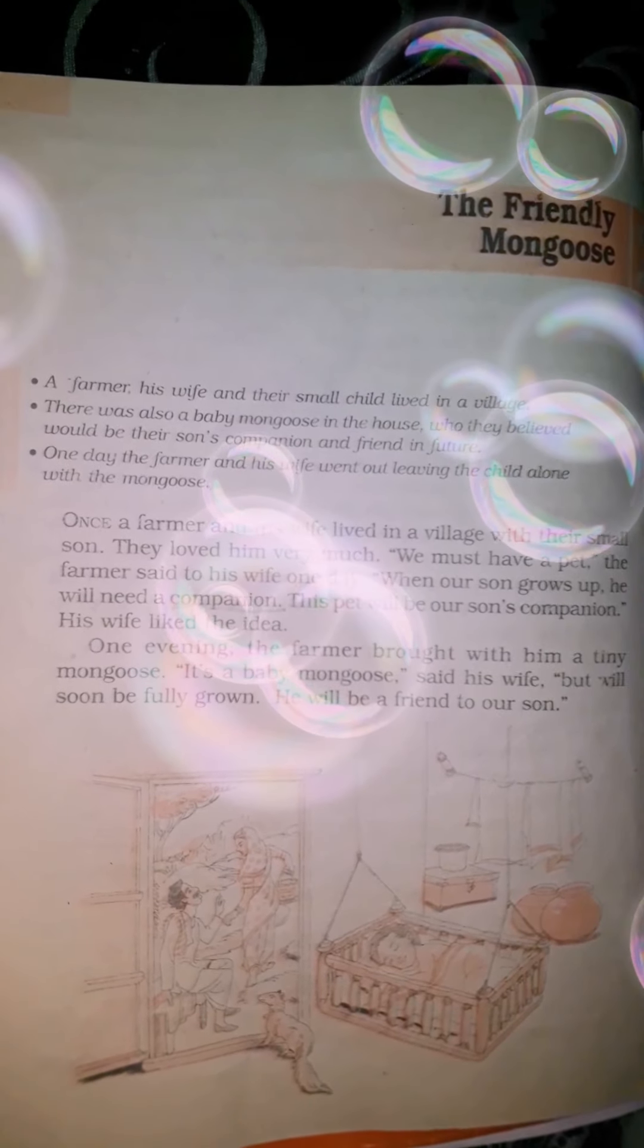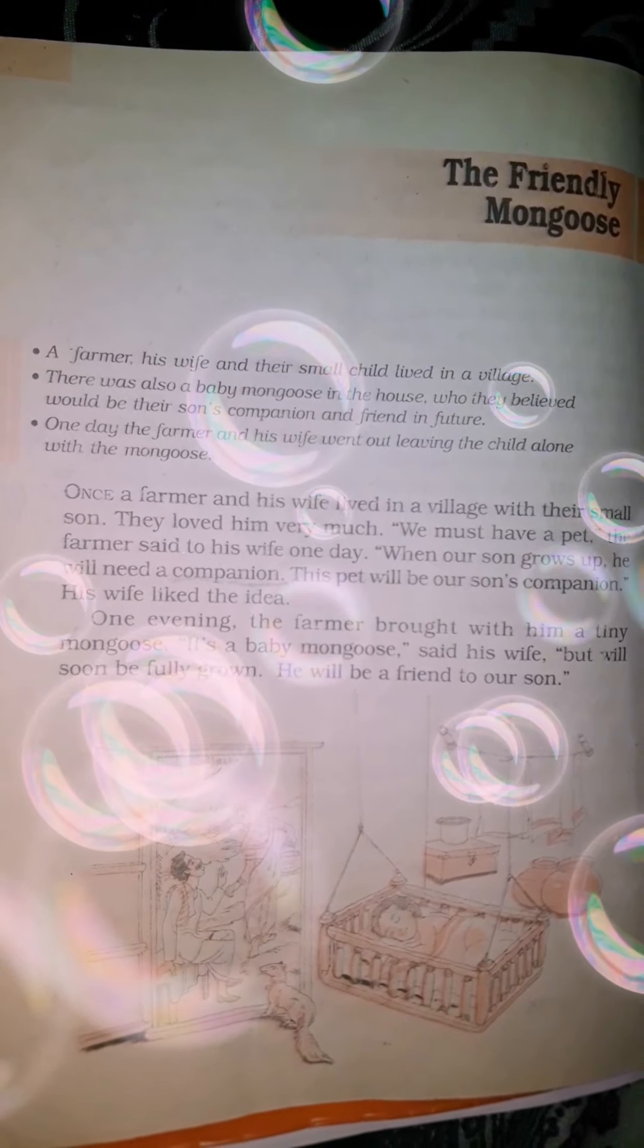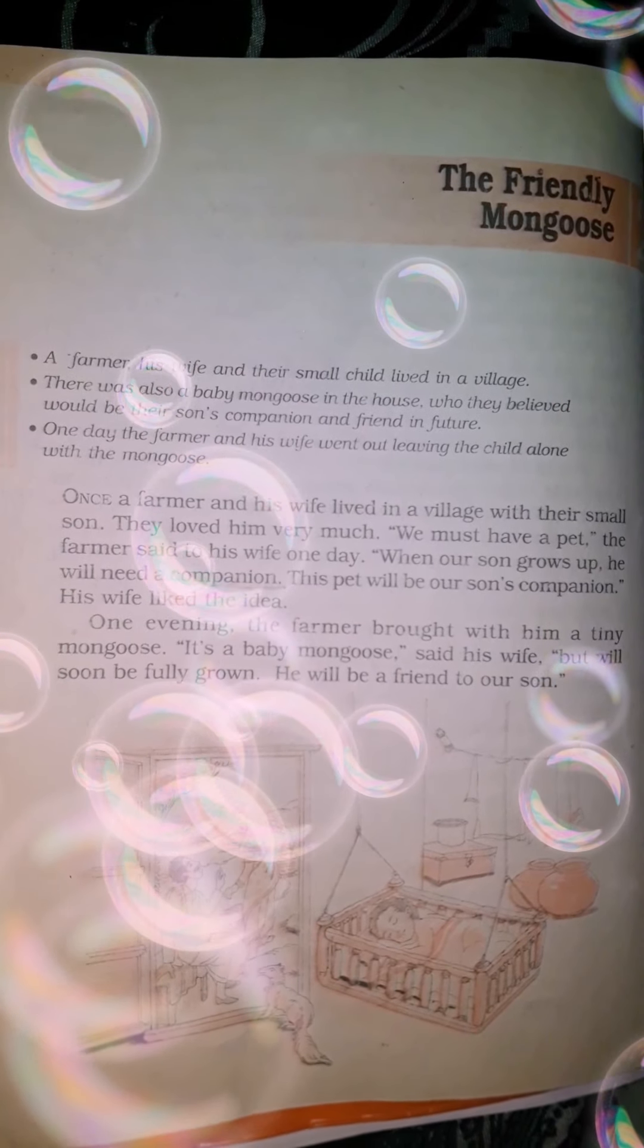Hello students, I am Himalata Agrawal from Shiji Baba School. Today I am going to tell you the summary of second chapter of Pact with the Sun. Chapter name is The Friendly Mongoose.